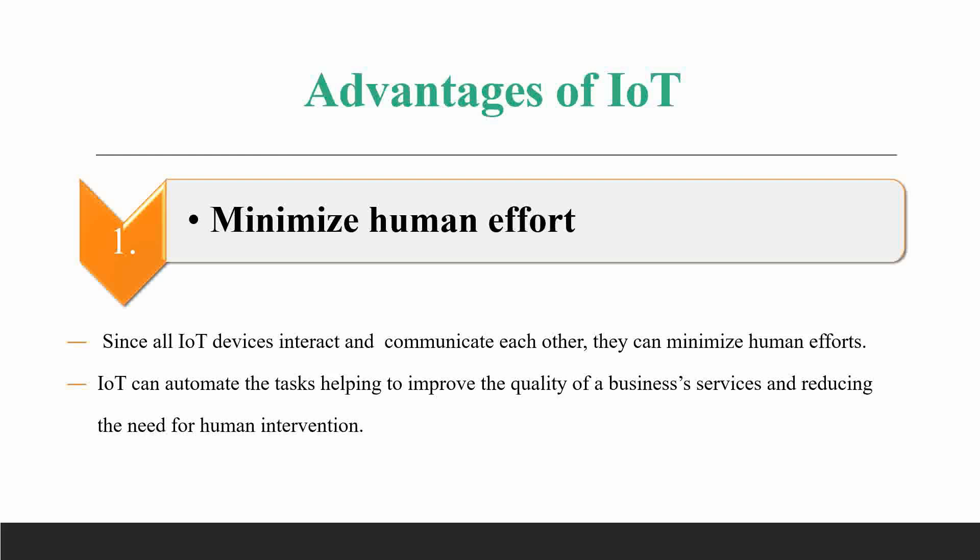The first advantage of IoT is minimizing human efforts. Since all IoT devices are interacting and interconnected with each other, they can minimize human efforts because we can do every type of task with the help of those smart devices.